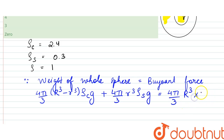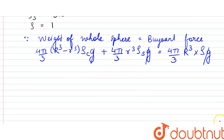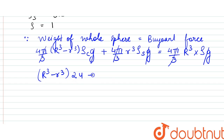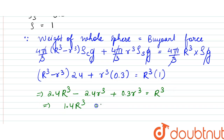Since g and (4π/3) cancel out on both sides, we get: (R³ - r³) × 2.4 + r³ × 0.3 = R³ × 1. Expanding: 2.4R³ - 2.4r³ + 0.3r³ = R³. This simplifies to 1.4R³ = 2.1r³, wait — rearranging gives 2.4R³ - R³ = 2.4r³ - 0.3r³, so 1.4R³ = 2.1r³.